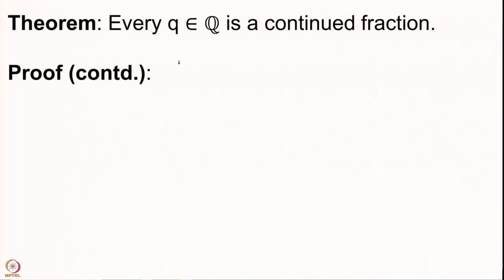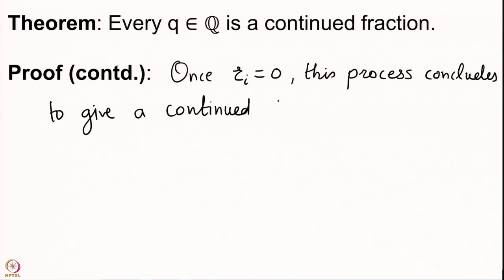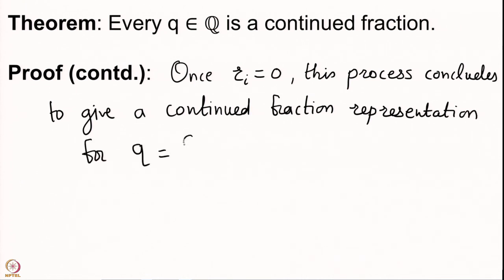Once r_i becomes 0, this process concludes to give a continued fraction representation for q = a/b. So we have proved that every continued fraction is a rational, and on the other hand every rational number can also be written as a continued fraction.